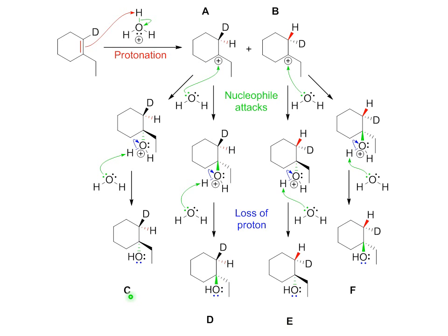These are labeled products C, D, E, and F. Notice that products C and F are enantiomers of one another—they have the opposite configuration at each and every stereocenter. Also notice that products D and E are enantiomers of one another; they too have the opposite configuration at each and every stereocenter. However, any other comparison of these products will be diastereomeric in nature.